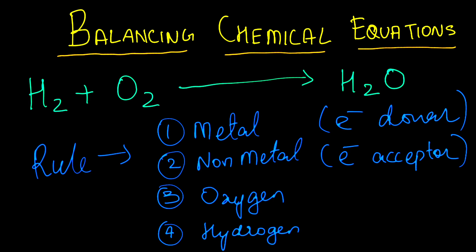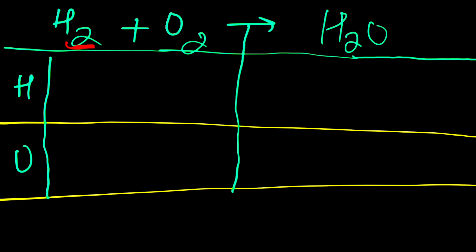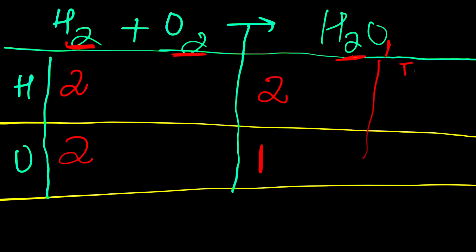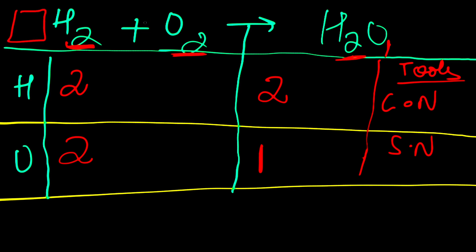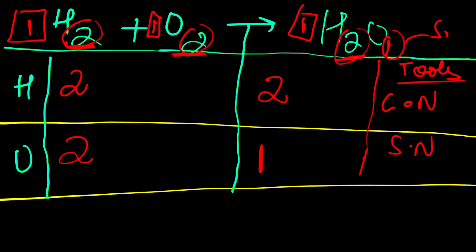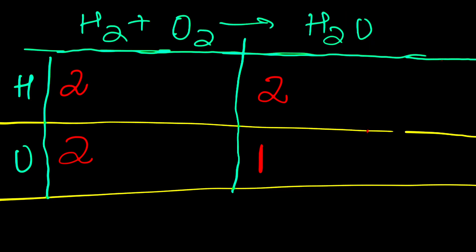So let's move on and learn the balancing trick. To balance, you have to equalize the left-hand side and right-hand side. On the left-hand side, there are two hydrogens and two oxygens. On the right-hand side, there are two hydrogens and one oxygen. Now we need to balance the oxygen. There are two tools: the coefficient number, which is placed in front of the molecule, and the subscript number, which is the small number written within the formula — for example, 2, 2, and 1.